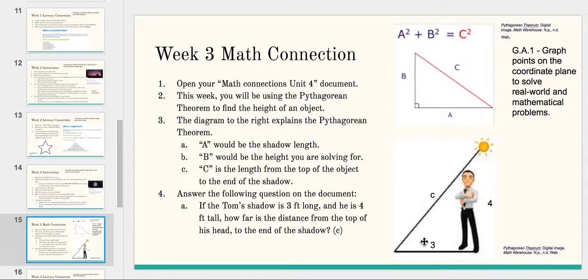If Tom's shadow is 3 feet long and he is 4 feet tall, how far is the distance from the top of his head to the end of the shadow? For this, you're going to fill in the blanks. A would be 3, so 3 times 3. B would be 4, so 4 times 4. Then you add that together and find out what the square root of that is. So when you add these two numbers together, you're going to get another number, and then you're going to try to figure out what number could be multiplied times itself to get that number. I'll give you a hint: it is a whole number, so it shouldn't be too hard for you to figure out.